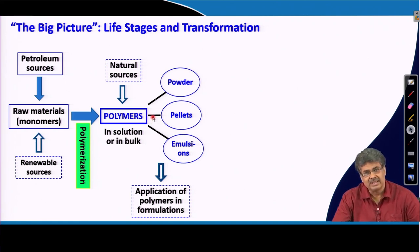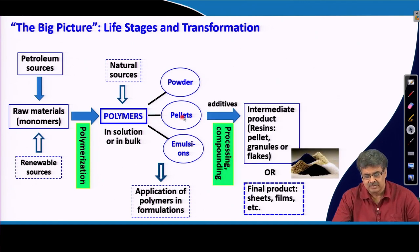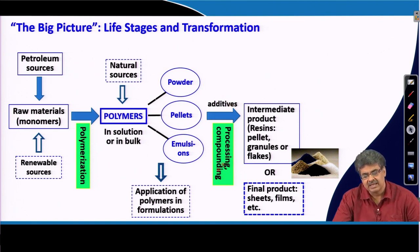In doing that, generally two steps are followed, though sometimes one step is enough to make a product. In the first step, polymer samples which are mostly in powder, pellets, or emulsion form are added with some additives and a process called compounding is carried out, giving us intermediate products like resins, pellets, granules, and flakes.